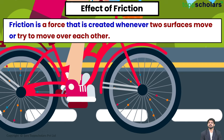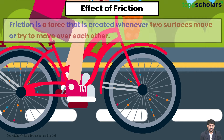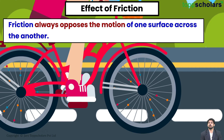Friction is a force that is created whenever two surfaces move or try to move over each other. Friction always opposes the motion of one surface across another.